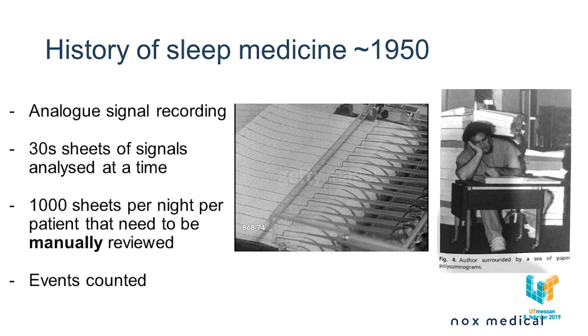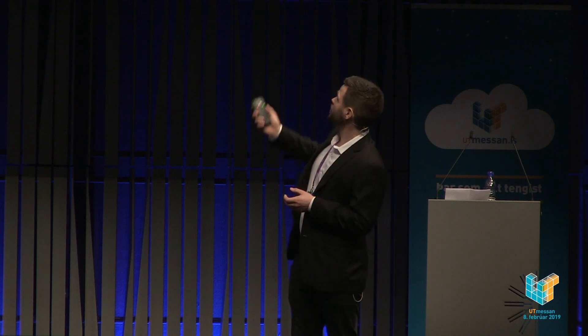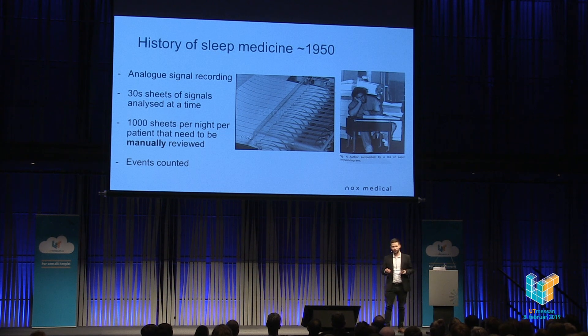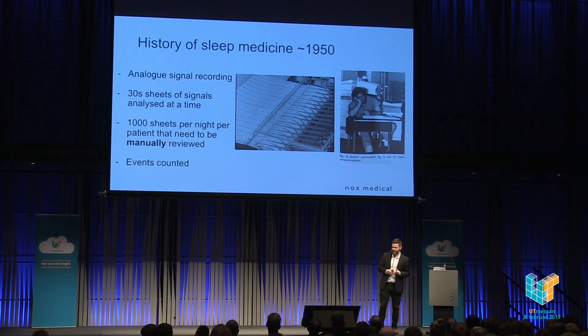Humans don't really sleep in five discrete stages, but to understand why sleep is classified this way, we have to look back. 70 years ago, this is how sleep studies looked: analog sensors and amplifiers that wrote down signal traces from the patient on paper — like earthquake monitors writing down electrical signals. Then you had a clinician who needed to go through 30-second pages of these signals and manually label what's happening, identifying which sleep states the individual is in. This made about 1,000 sheets of paper per night that needed to be manually reviewed.